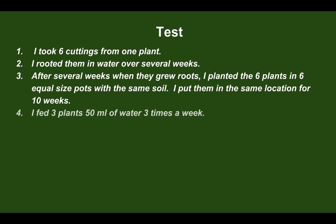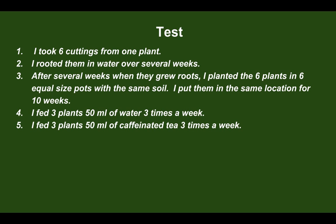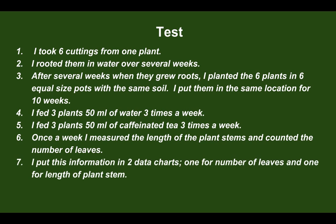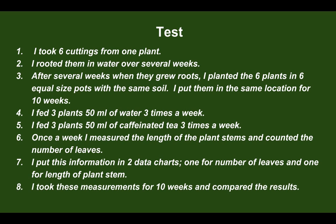I fed three plants 50 milliliters of water three times a week and I fed three plants 50 milliliters of caffeinated tea three times a week. Once a week I measured the length of the plant stems and counted the number of leaves. I put this information in two data charts — one for number of leaves and one for length of plants — and took these measurements for ten weeks, then compared the results.